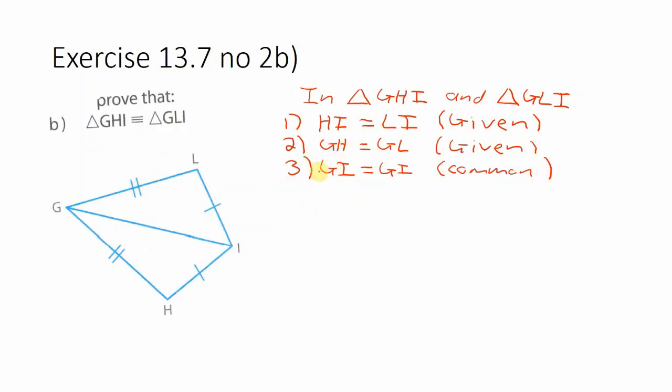So we are now done with our body. Final step is our conclusion. Since we have three aspects, we can say therefore triangle GHI is congruent to triangle GLI.